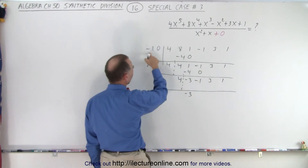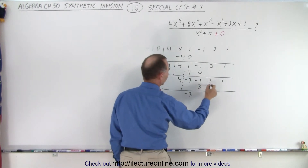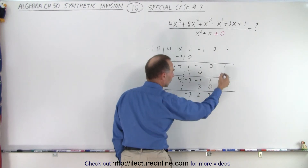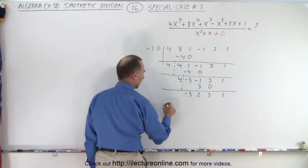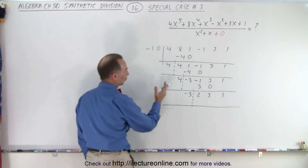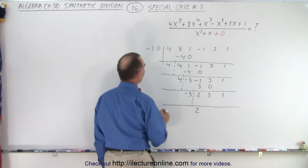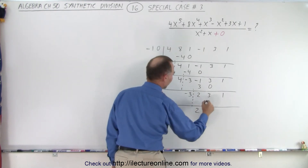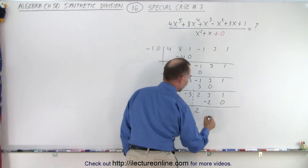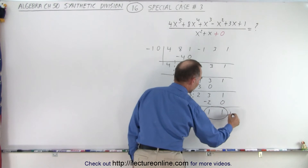We do the same thing again: negative 1 times negative 3 is a positive 3, 0 times 3 is 0. Add the numbers together, we get a 2 and a 3, and we drop down the next number, 1, and draw another line. We drop the next number which is a 2, then negative 1 times 2 is negative 2, 0 times 2 is 0. Add the numbers together, we get a 1 and a 1, and these are of course the remainder.